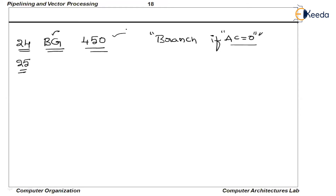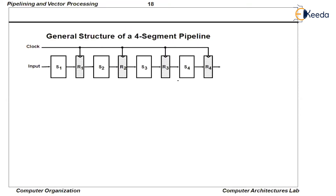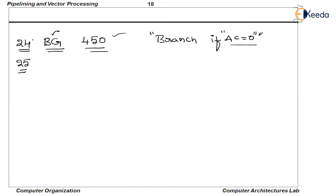Where will the condition get checked? The condition will be checked in the fourth stage, because it is an ALU operation. Whether the accumulator is equal to 0 or not — to check this, we need to send the value of the accumulator to the ALU, and when performing the operation, we check if the accumulator is equal to 0. So the condition will be evaluated in the ALU stage, which is the fourth stage. Unless the fourth stage is finished — that means unless the 24th instruction gets completely executed — we don't know what the next instruction is. The next instruction could be the 25th instruction or the 450th instruction. If the condition is satisfied, it's 450; otherwise, the 25th instruction is sent into the pipeline.